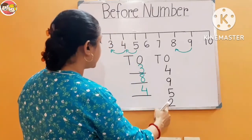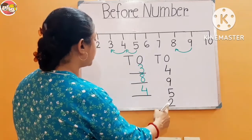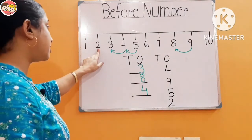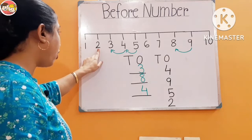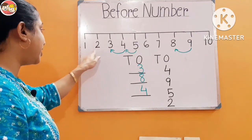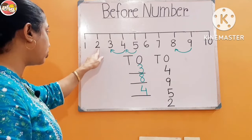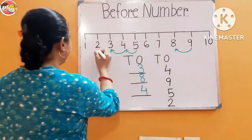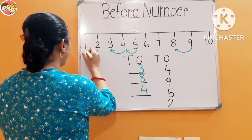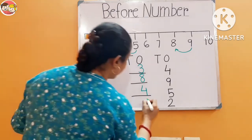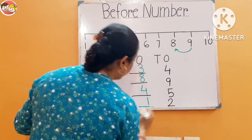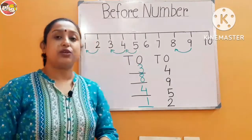Next number is 2. What comes before number 2? Number 2 se pehle — before means pehle — 2 se pehle 1. What comes before number 2? 1. So here we have to write number 1. I hope the 'before' number concept is clear to everyone.